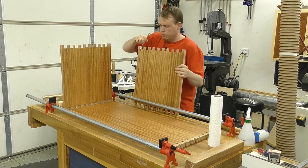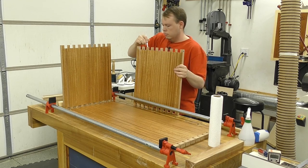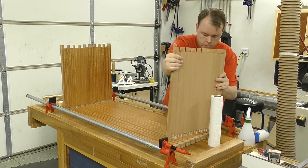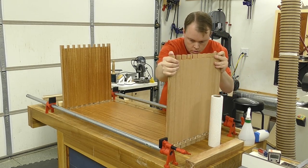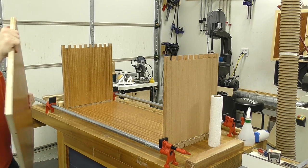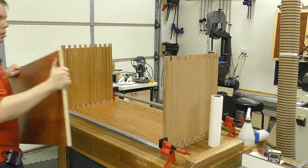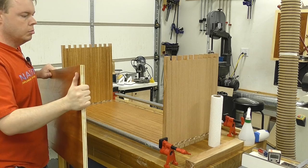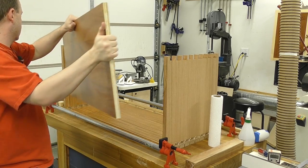Again, just like before, I apply the glue on the pins and the sockets, making sure once again to get glue on all of the faces. And now I'm going to install the bottom panel, and it's important to make sure that the better looking face is facing up so that you see it every time that you open the blanket chest.